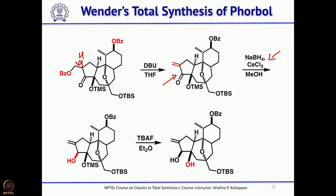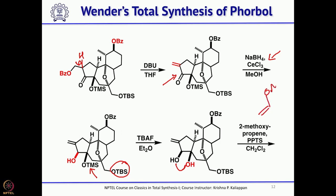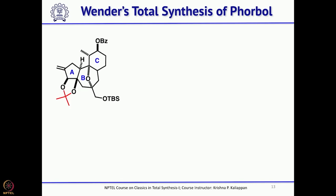With the allylic alcohol in hand, the OTMS group was selectively removed in the presence of OTBS using one equivalent of TBAF, since OTMS is removed faster than OTBS. The resulting 1,2-diol was protected as an acetonide by treatment with 2-methoxypropene and PPTS.